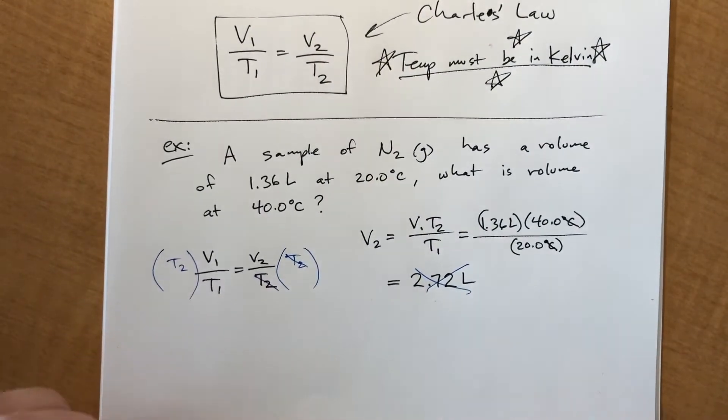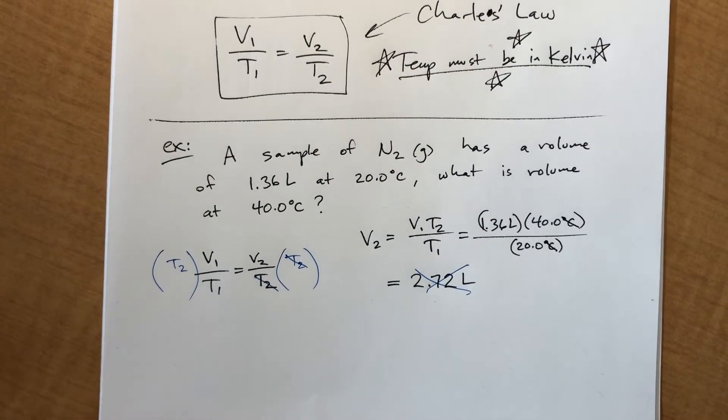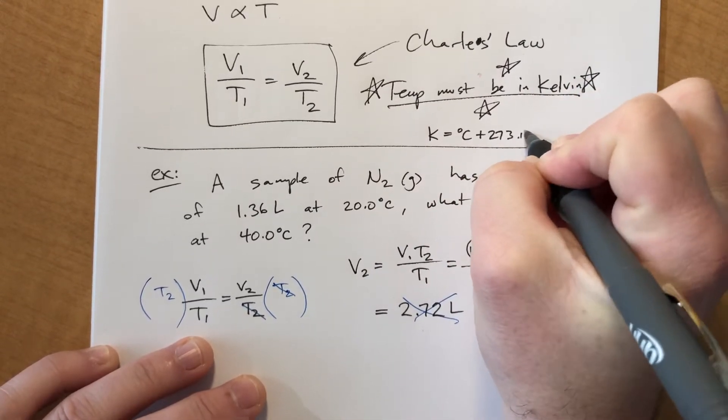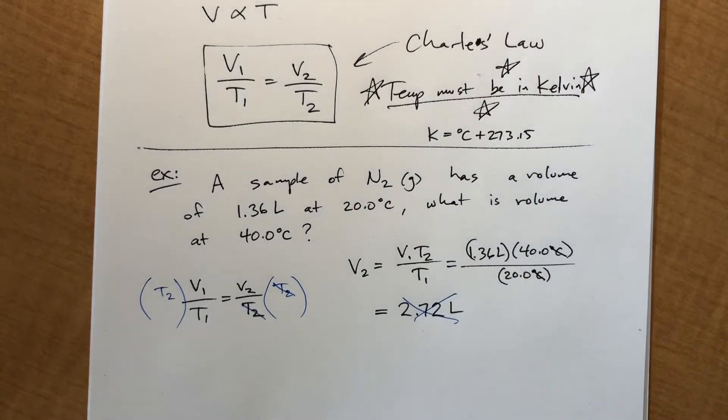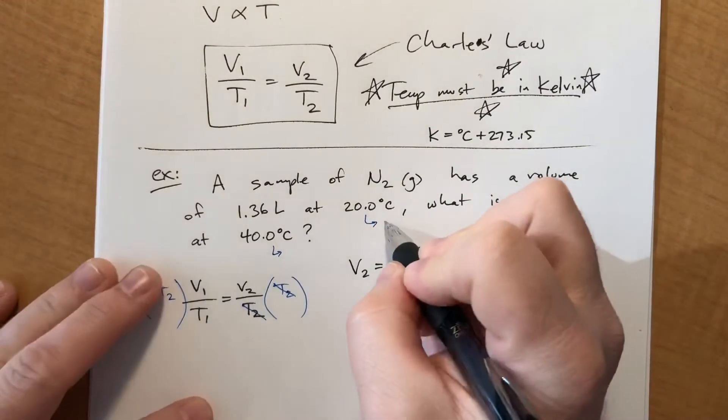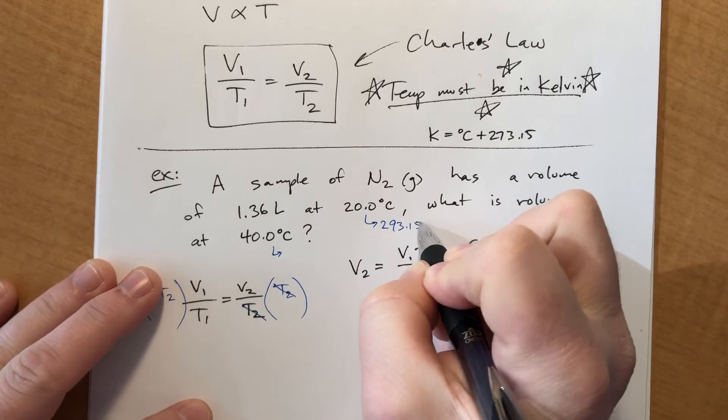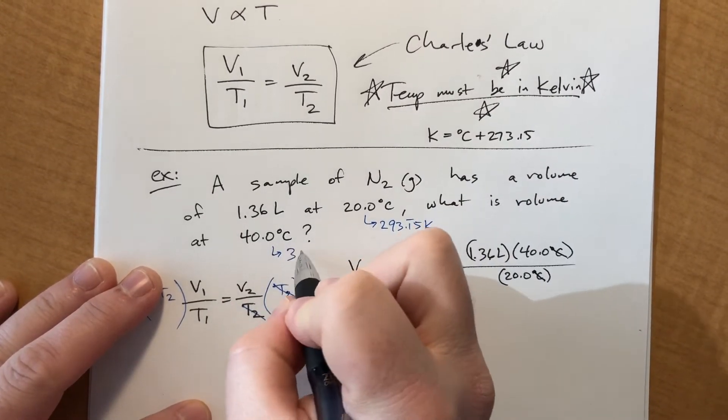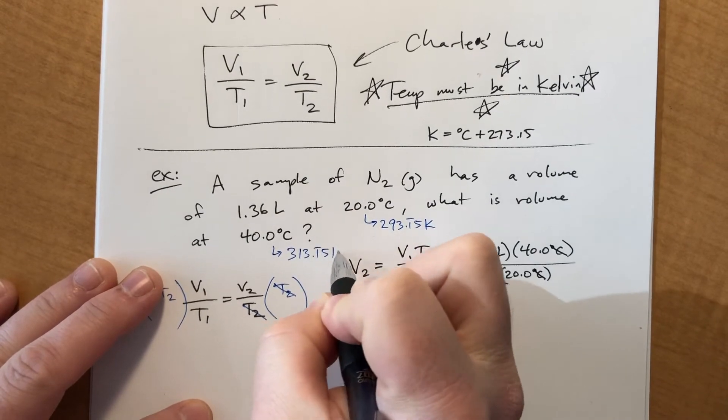Because it's the only temperature scale that doesn't have negatives. Converting to Kelvin is not difficult. You just add 273.15. So Kelvin equals degrees Celsius plus 273.15. So let's do each of these numbers and see what we get. This would be 293.15 Kelvin. And I guess 20 more than that would be 313.15 Kelvin.